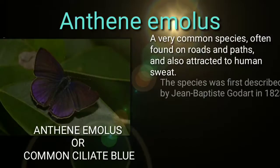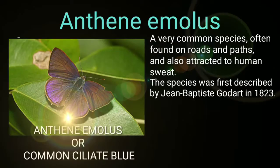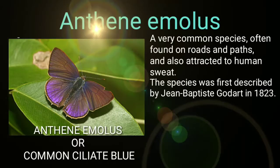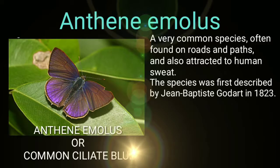Anthene Amolus, or Common Celiac Blue Butterfly. A very common species often found on roads and paths, and also attracted to human sweat. This species was first described by Jean-Baptiste Caudard in 1823.